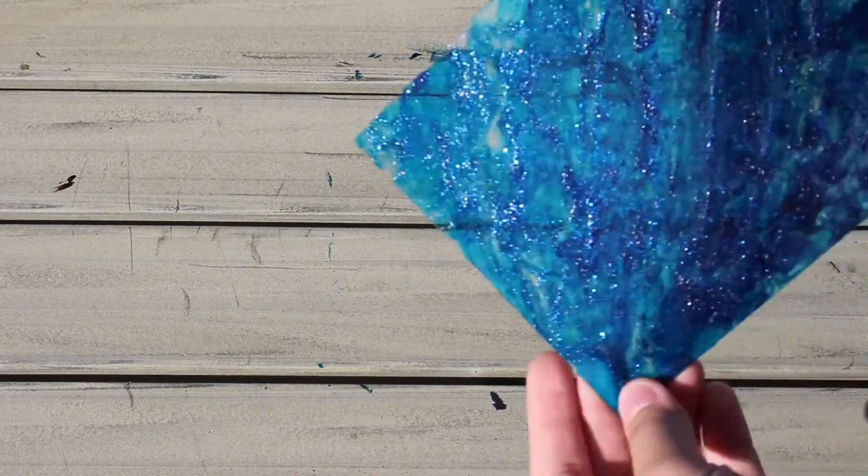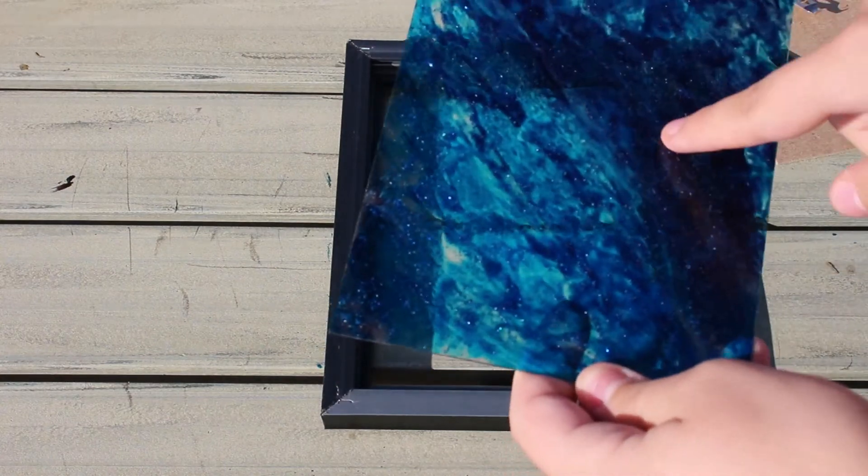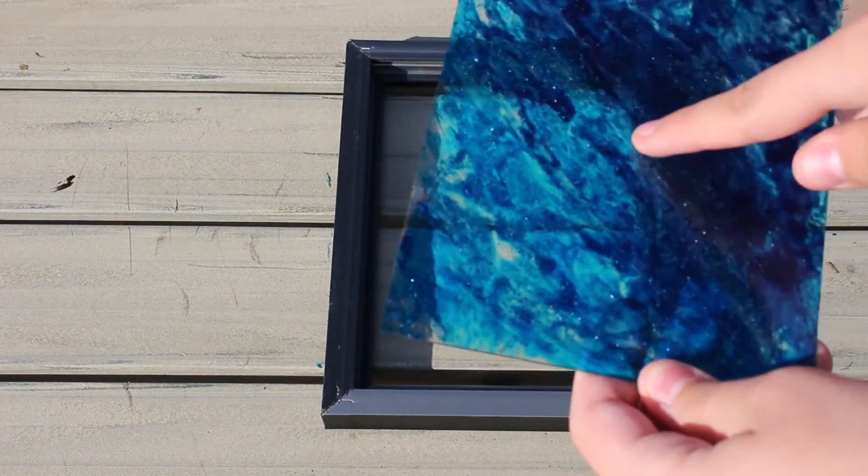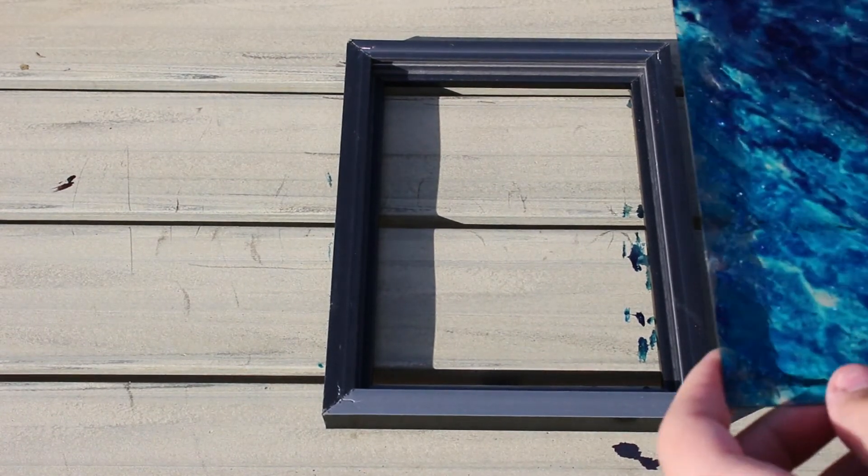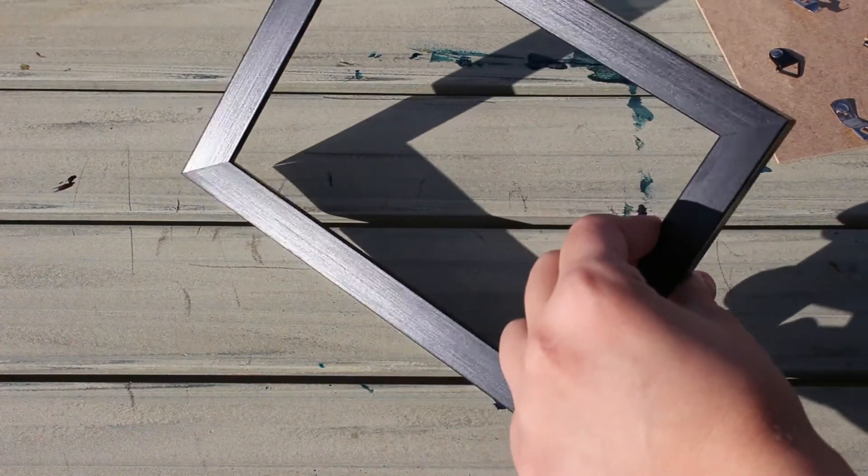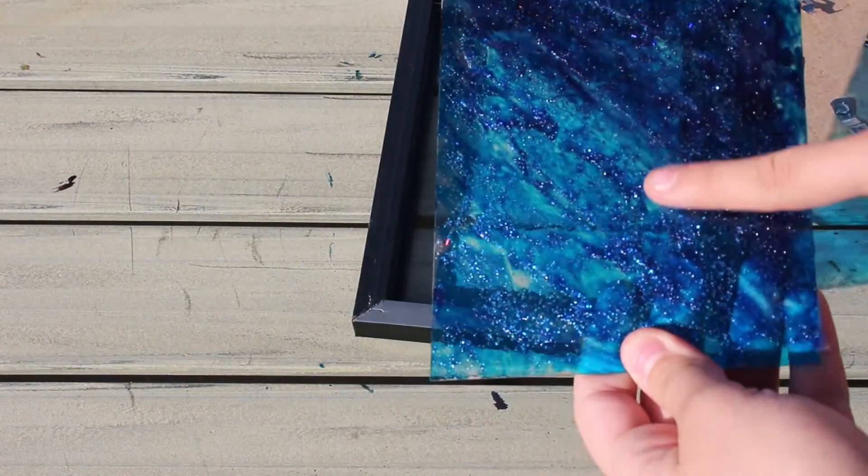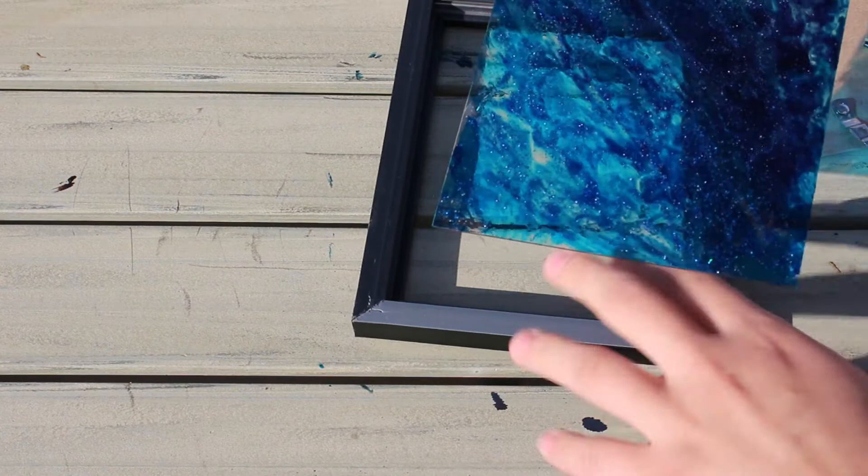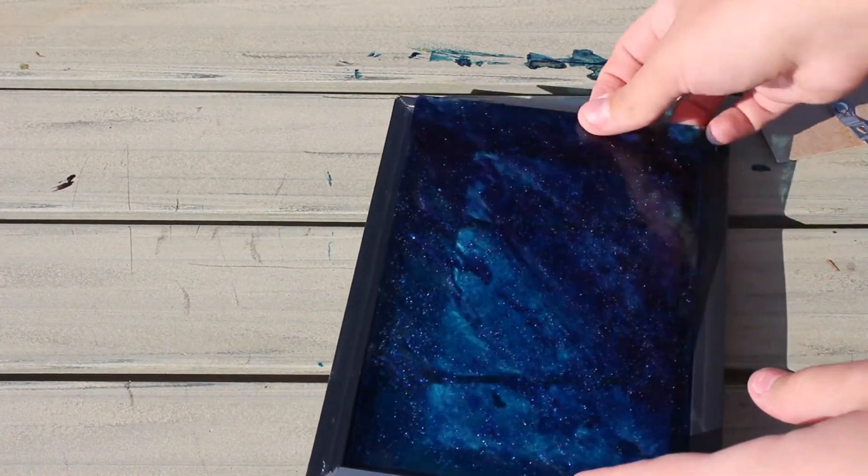Alright, so now what we're going to do is we're going to be putting it back into the frame. So we're going to take our frame here, and the side that you glued on and put the food coloring on, you're going to be keeping it on the inside. That way when you turn the frame over you see the clean side through the other side. So the messy side that's textured that you worked on, it's going to be face up in the frame.